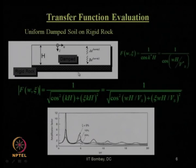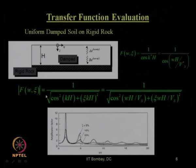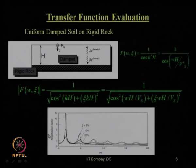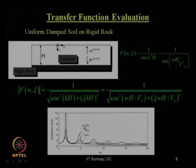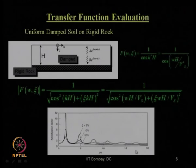The transfer function is a function of frequency and the damping ratio, expressed in this pattern — it can be mentioned as an amplification factor in terms of kh. As the damping ratio increases, the amplification factor will decrease, and so on with number of cycles.